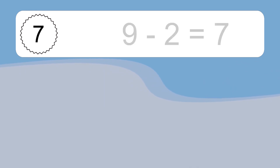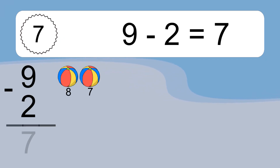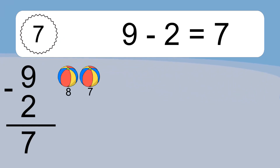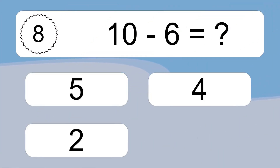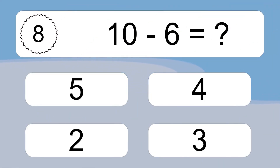9 minus 2 equals what? 9 minus 2 equals 7. Let's count it. 8, 7.